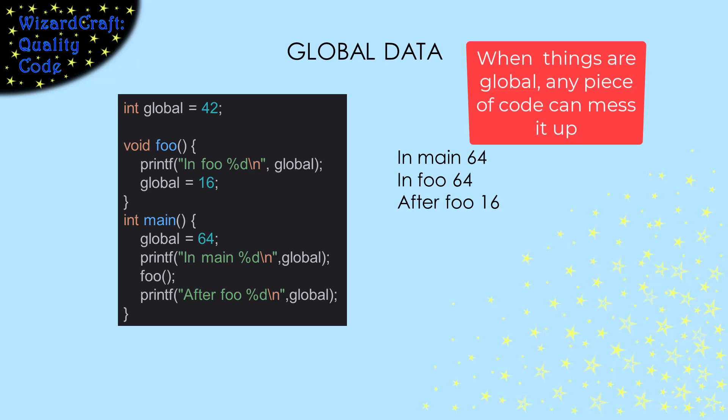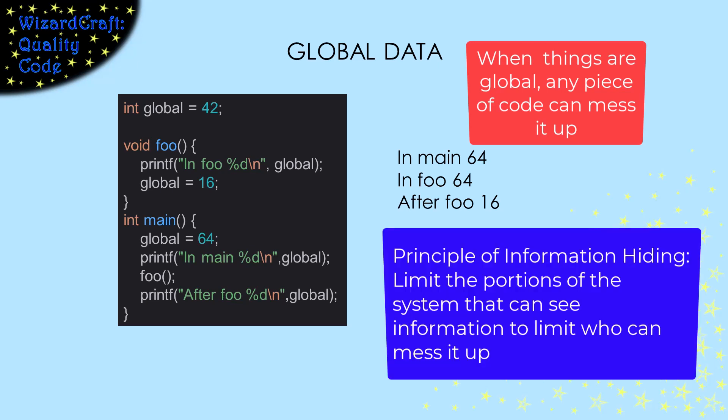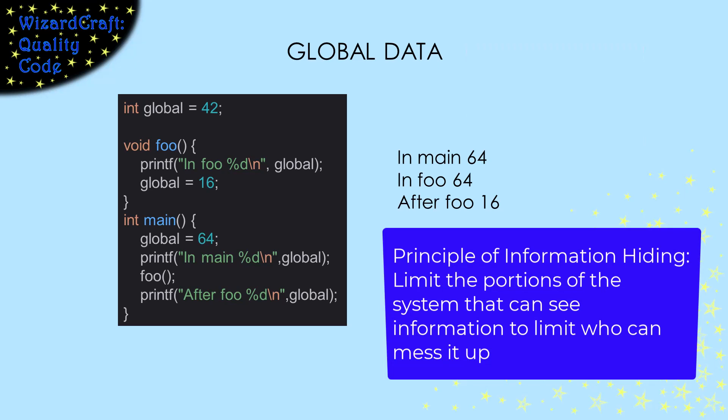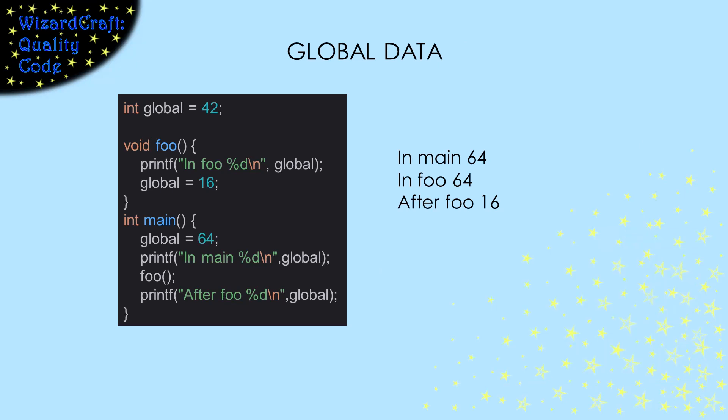Every piece of code can mess it up. Good design means that we follow the principle of information hiding. We should restrict the access of all information to only let the parts of the system that need it touch it. Global variables do not do that. Global variables are like putting your safe deposit box on main street with no lock on it. Very risky. So we'll minimize the use of global data as much as possible.